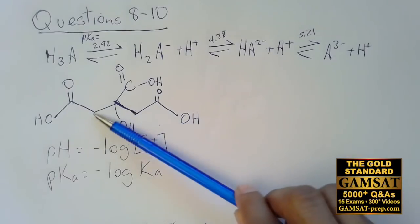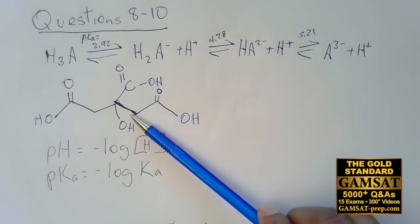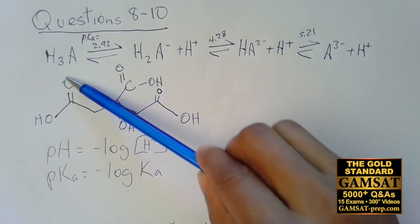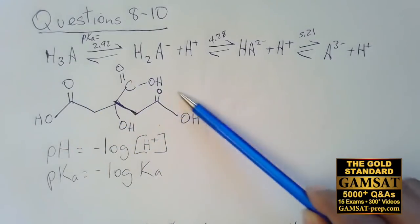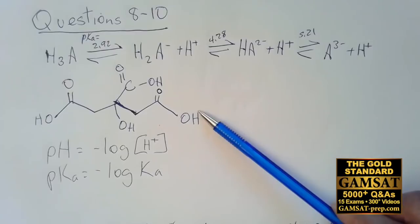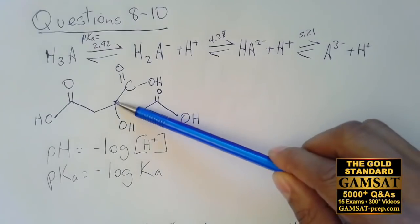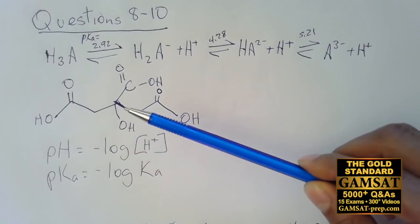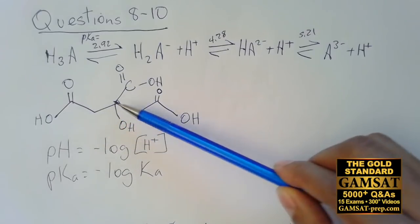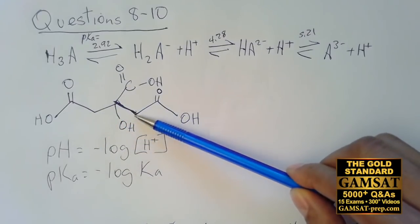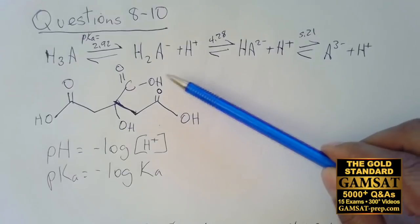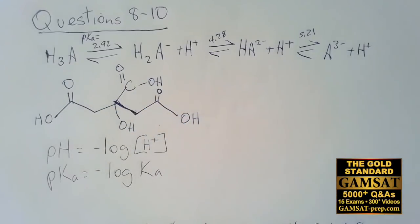First of all, propane because there are one, two, three carbons, so you would call this a propane with three carboxylic acid groups. This would be 2-hydroxy-propane-1,2,3-tricarboxylic acid, because these are carboxylic acid groups.